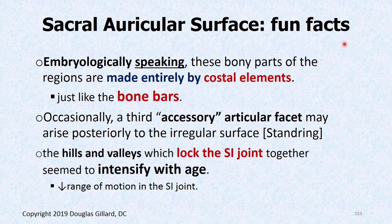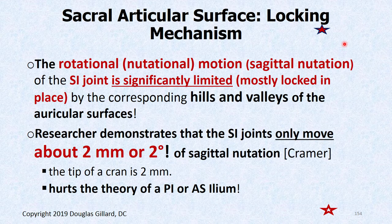Fun facts: embryologically, the sacral auricular surface was formed by costal elements, just like the bone bars between the posterior sacral foramina. Occasionally there's a third accessory articular facet. The hills and valleys lock the SI joint together but get very sticky with age and start to calcify. It's not unusual for older people to have the SI joints completely fused, so trying to adjust the SI joint in an elderly patient may be impossible and could hurt them.